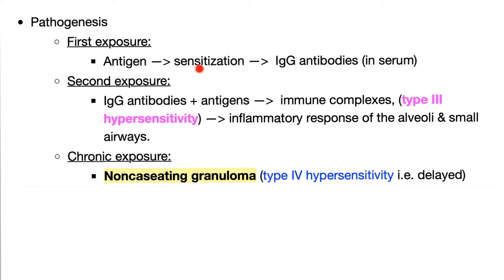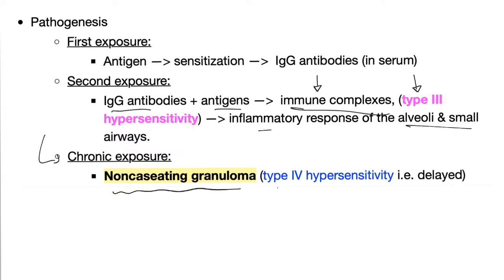Pathogenesis: on first exposure, you encounter the antigen and become sensitized, producing IgG antibodies. On second exposure, the response is faster and stronger — the IgG antibodies combine with the antigen to form immune complexes, which is a type 3 hypersensitivity reaction. Those immune complexes lead to inflammatory response in the alveoli and small airways. With chronic exposure, you'll form a non-caseating granuloma, which is a type 4 hypersensitivity reaction, also known as delayed hypersensitivity.